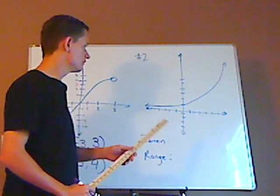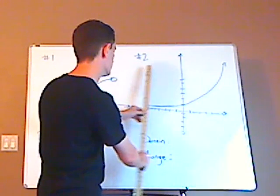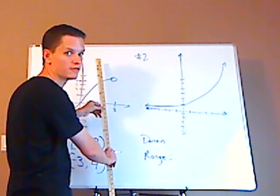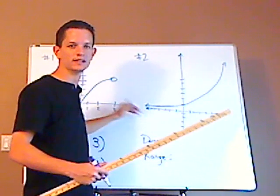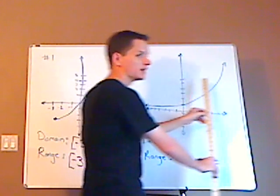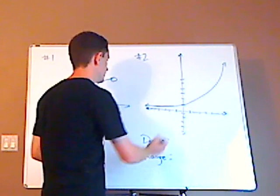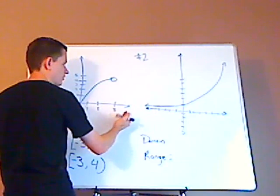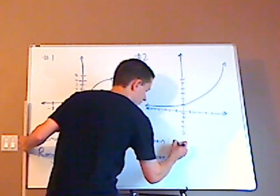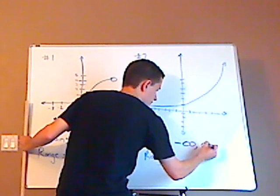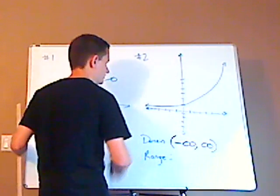Now, notice here your domain is all possible x-values. From the left-hand side, it goes on forever and ever — very negative, gets increasingly negatively large. Then it goes in the opposite direction, getting more and more positive. So it's going to go from negative infinity, starting left to right, all the way to positive infinity. That's negative infinity to positive infinity, and always in parentheses around either positive or negative infinity.